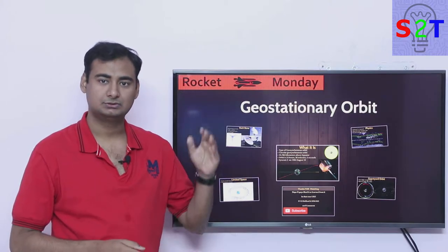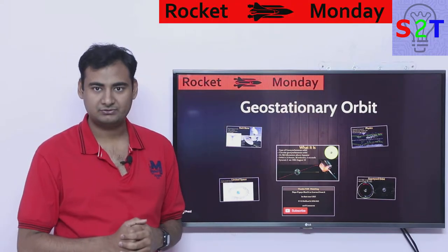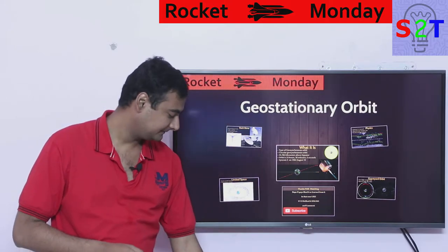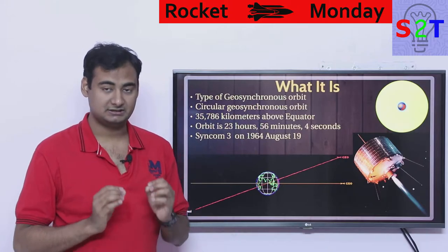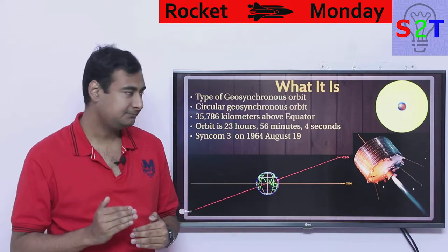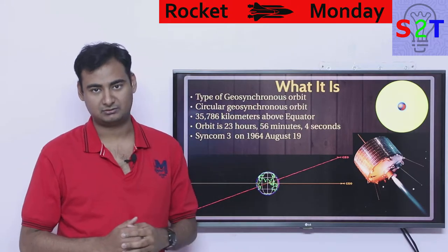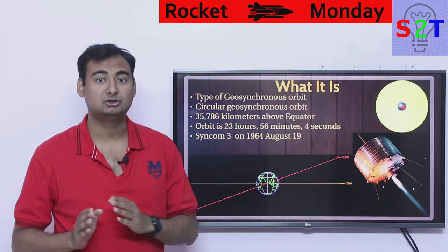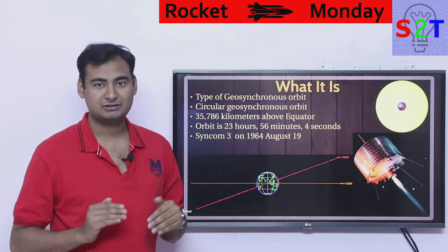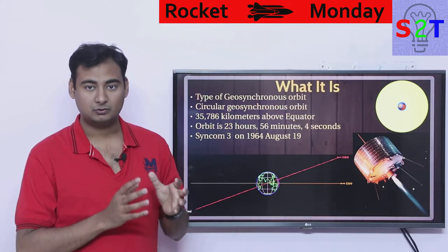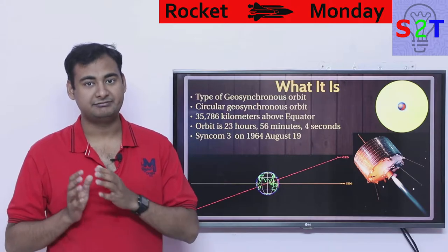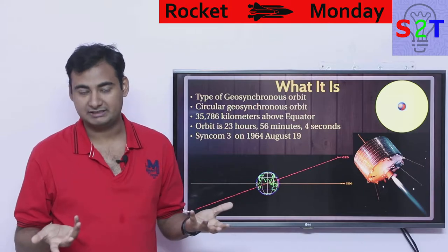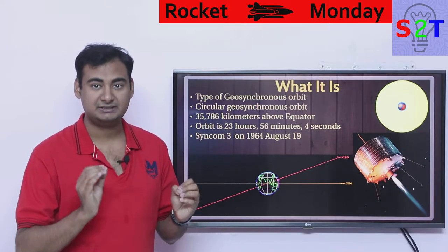Hello YouTube viewers, welcome to my show Rocket Monday. In today's episode we're going to take a look at geostationary orbit. Now, geostationary orbit is a type of geosynchronous orbit. You might hear these words used interchangeably, however they are two separate things. You have to understand it like: every square is a rectangle but not every rectangle is a square.